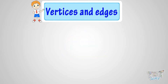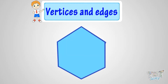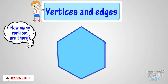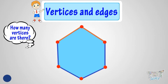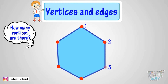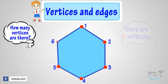Now, here we have another figure. Let's see how many vertices are there in this figure. We know vertices are the points where two edges meet, or they are the corners in the figure. So let's count: one, two, three, four, five, six. Six vertices.